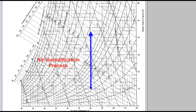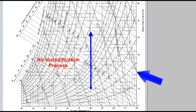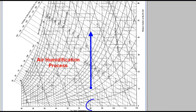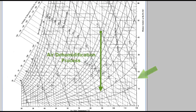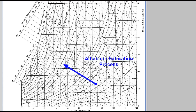In the air humidification process, described by a vertical line, the humidity of the air increases — so the humidity ratio increases — but dry bulb temperature remains constant. In the dehumidification process, also described by a vertical line, the humidity ratio decreases, and again the dry bulb temperature remains constant.